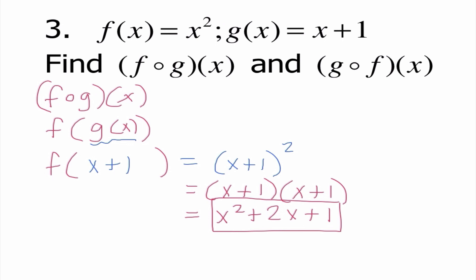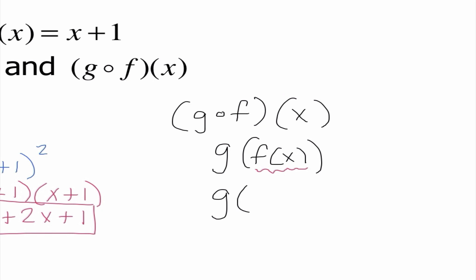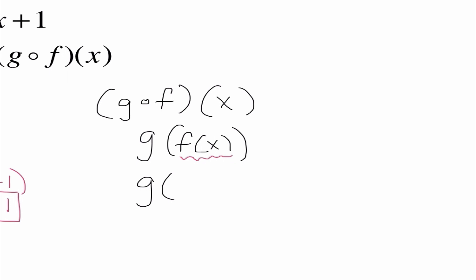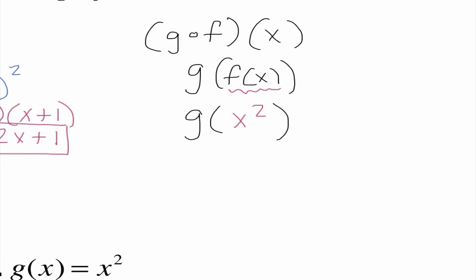Now we do g of f of x. This time f of x is inside, and f of x is x squared. So I write g of x squared, meaning in function g, wherever there was an x I replace it with x squared. Function g originally was x plus 1, so I write x squared plus 1. So x squared plus 1 is our final answer.